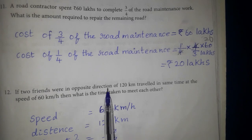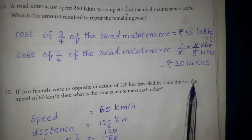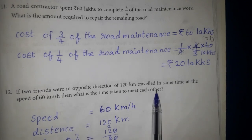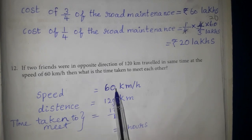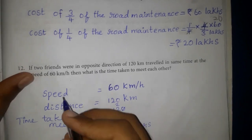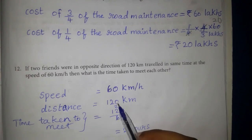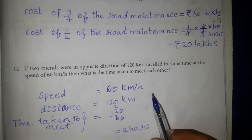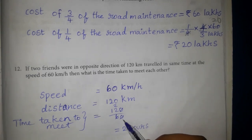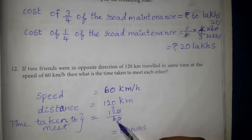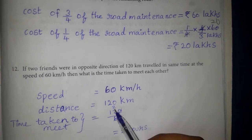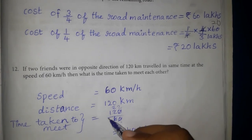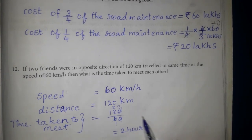12th one. If two friends were traveling toward each other from opposite directions with a distance of 120 km between them, each at the speed of 60 km per hour, then what is the time taken to meet each other? Speed is 60 km per hour, distance is 120 km. Time = 120 divided by 60 = 2 hours.